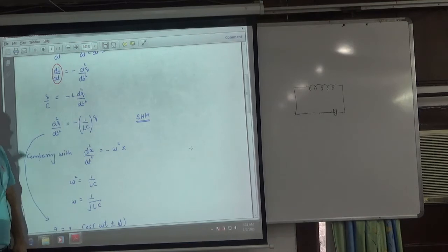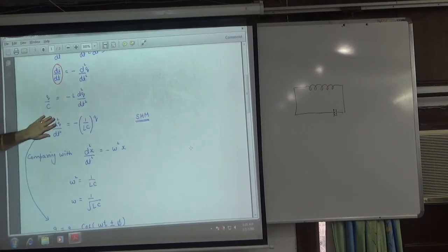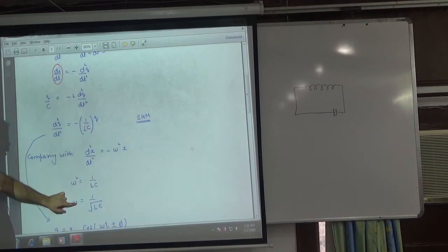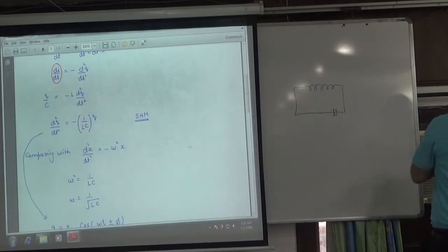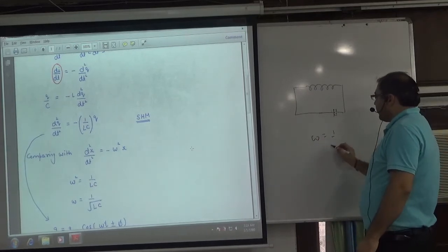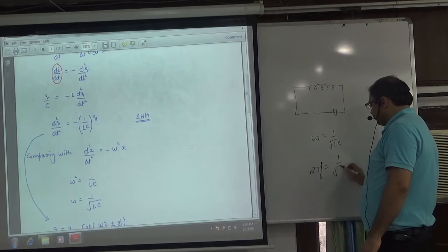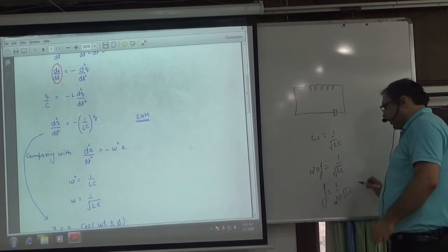Charge is oscillating. So charge in SHM. This differential equation is in SHM. Omega square, and omega is 1 by under root of LC. Omega is 2 pi frequency, so frequency is 1 by 2 pi under root of LC.